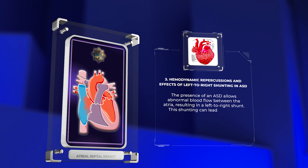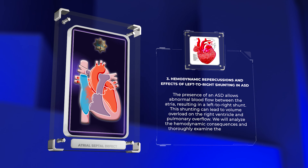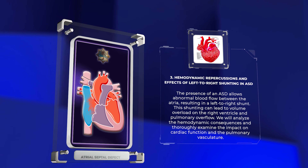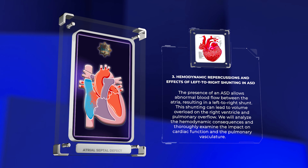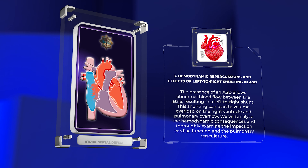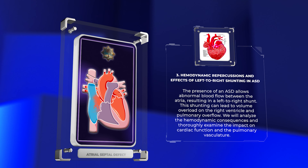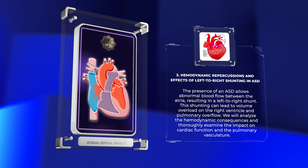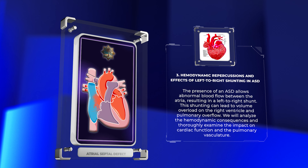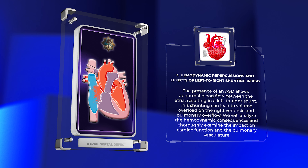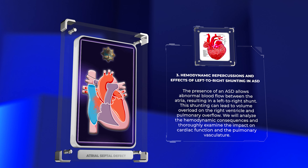The presence of an ASD allows abnormal blood flow between the atria, resulting in a left-to-right shunt. This shunting can lead to volume overload on the right ventricle and pulmonary overflow. We will analyze the hemodynamic consequences and thoroughly examine the impact on cardiac function in the pulmonary vasculature.